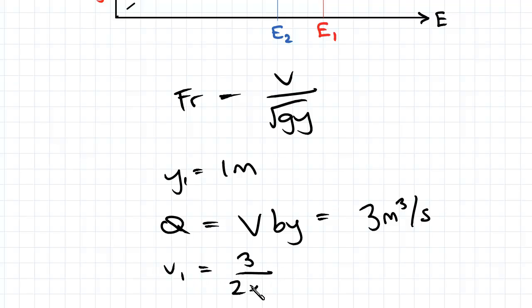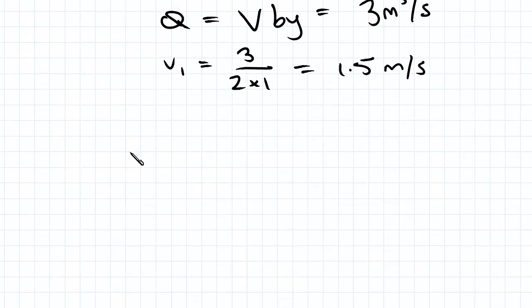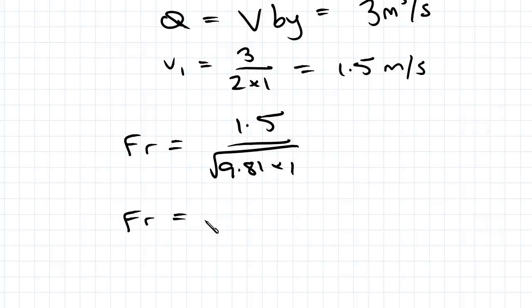So subbing our values for v1 and y1 into the Froude number equation we get Fr equals 1.5 on square root 9.81 times 1 which gives us an Fr equal to 0.479 and clearly that's less than 1. And since it's less than 1 we know it's a subcritical flow which is the top branch of the specific energy curve.